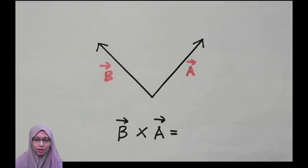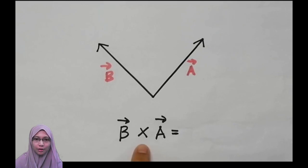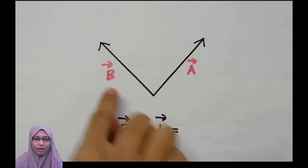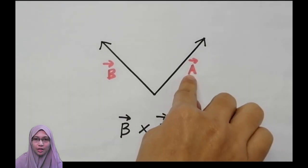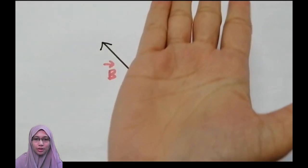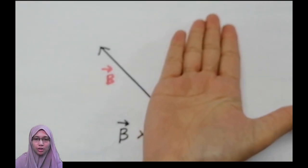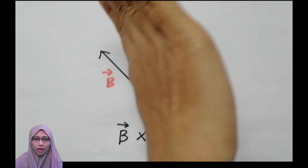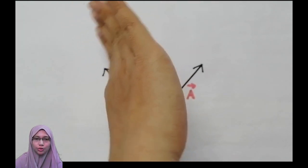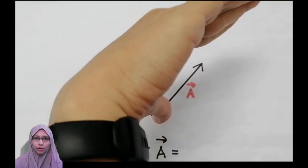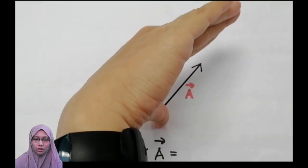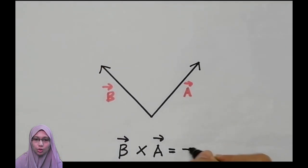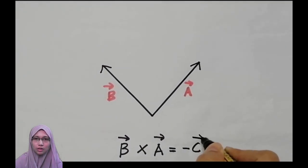Now let's look at the case of B cross A. This is vector B and this is vector A. B cross A is shown again by the right-hand rule — we swipe our hand from B to A, and it will produce a new vector directed into the page, which is opposite to the previous case. So this time it is negative C.